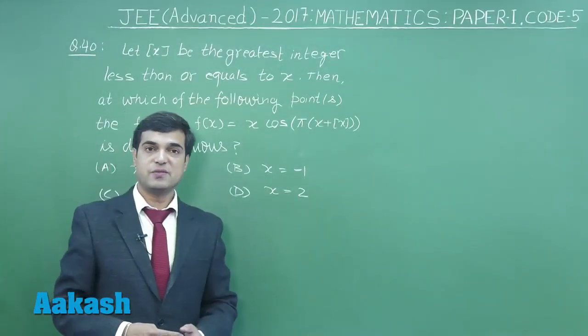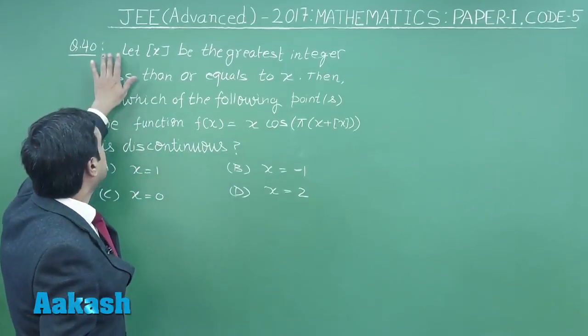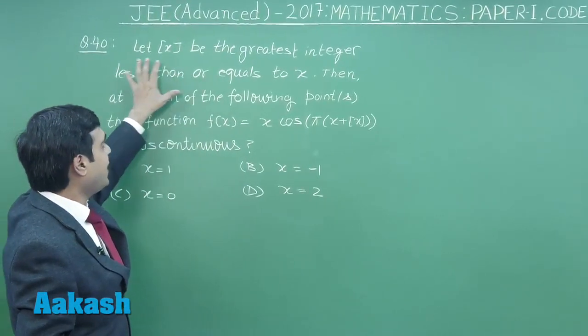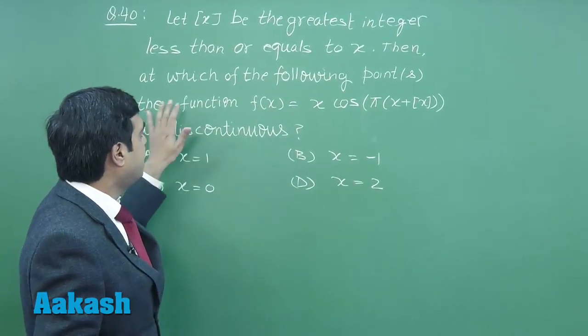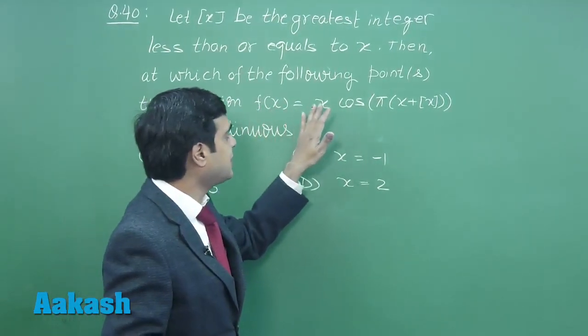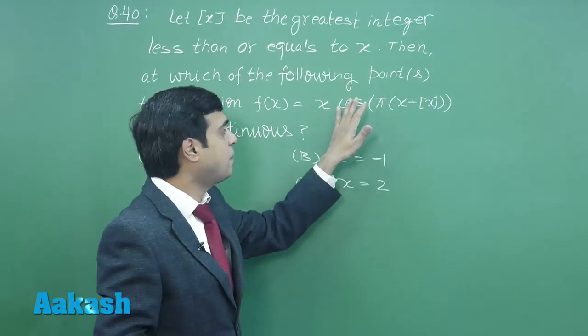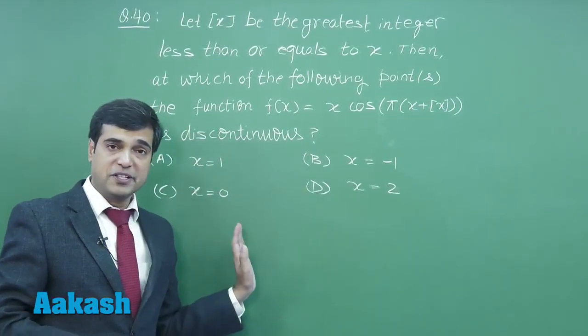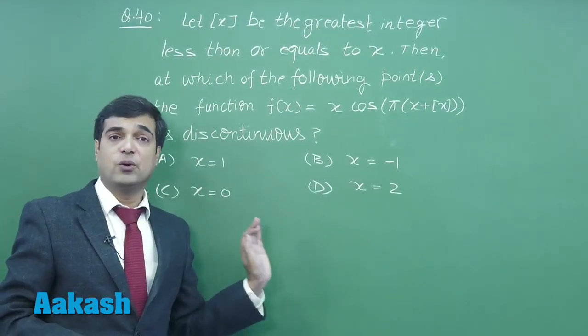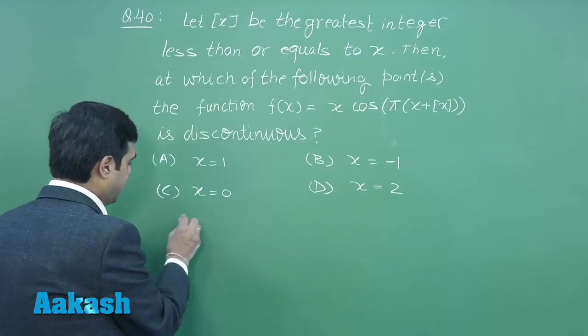Let us move to the next question, question number 40. Let greatest integer x be given. Then at which of the following points the function f equals x into cos(pi times x) plus greatest integer x is discontinuous. Four options are given: 1, minus 1, 0, and 2. Let us start this question.